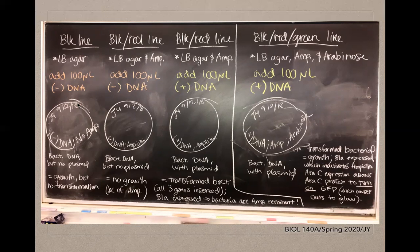On the first petri plate you would streak regular E. coli cells that have not been transformed onto Luria-Bertani agar, and you would expect to see growth but no transformation. When you streak the same untransformed sample on the second plate, which contains agar and ampicillin, you would expect to see no growth — no bacterial cells survive due to the presence of the antibiotic.